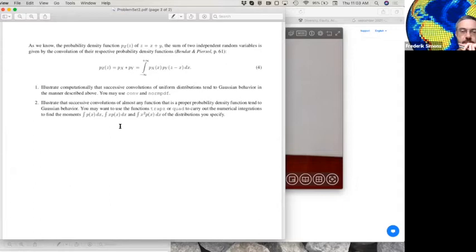Illustrate computationally that successive convolutions of uniform distributions tend to Gaussian behavior in the manner described above. You may use CONV, the convolution operator in MATLAB. You may use NORMPDF. I deliberately make this a one-line question. So that you can use your human intelligence and ingenuity to convince yourself this is the case, to convince me this is the case, to convince me that you understand it, to convince yourself that you understand it.